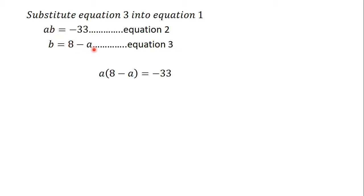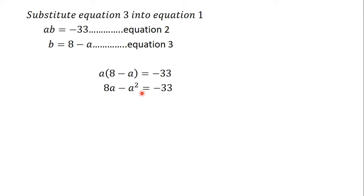We now open the bracket and simplify. a times eight gives us 8a, and a times a gives us a squared, but because of the minus sign we have minus a squared. So we get 8a minus a squared equals negative 33.